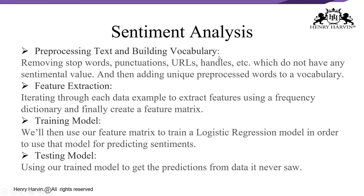The sentiment analysis pipeline has four steps. First is pre-processing text and building a vocabulary — removing stop words, punctuation, URLs, and special hashtags, then adding unique pre-processed words to the vocabulary. Second is feature extraction — iterating through each data example to extract features using a frequency dictionary and creating a feature matrix. Third is training the model using the feature matrix with logistic regression. Fourth is testing the model on data it has never seen.